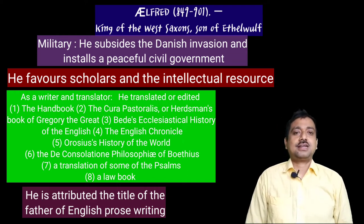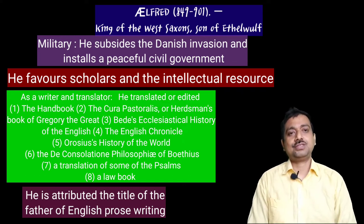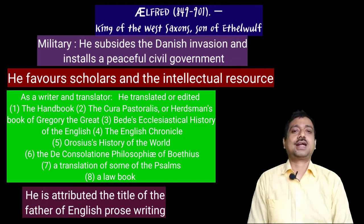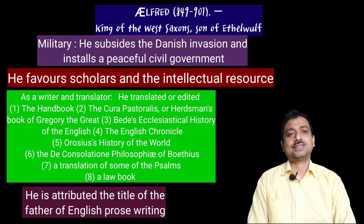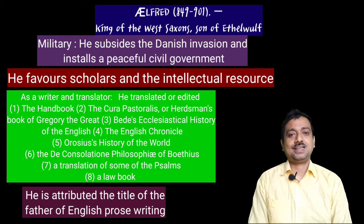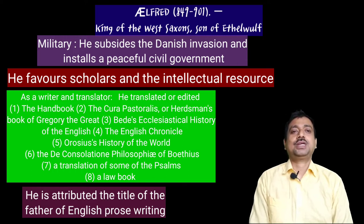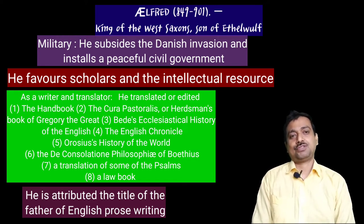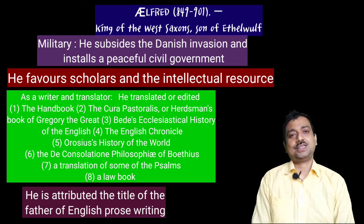As a writer and translator, Alfred either translated texts himself or commissioned their translation from Latin into Old English. Notably, he commissioned the Handbook, a collection of extracts on religious subjects. He translated Cura Pastoralis — the Herdsman's Book of Gregory the Great — with a preface by himself. This represents some of the earliest English prose we can find. Bede's Ecclesiastical History of the English People was also translated by him.